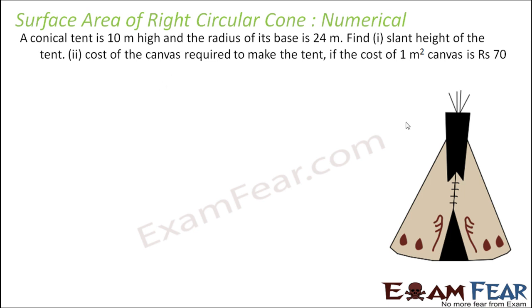A conical tent, 10 meter high, so this height is given 10 meter. Radius of the base is given 24 meter. Find the slant height, slant height is pretty easy, L is equal to root R square plus H square. What is the value of R? R is 24, H is 10, and this is nothing but root 676, that is 576 plus 100, 676 that is 26 meter. That is the slant height, first part is done.